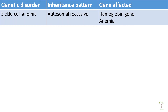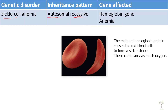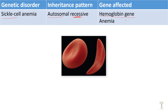Our first example is called sickle cell anemia, and this is an autosomal recessive disease. It is on one of the autosomes and it is recessive, so that means in order to have sickle cell anemia you need to have both alleles. Sickle cell anemia affects the hemoglobin gene. We use a capital H for normal hemoglobin and a small h for sickle cell hemoglobin. In order to have sickle cell anemia you need to have both recessive mutated alleles.